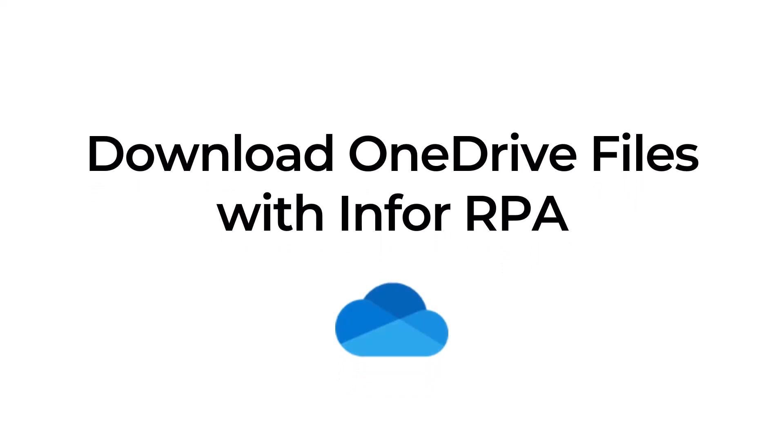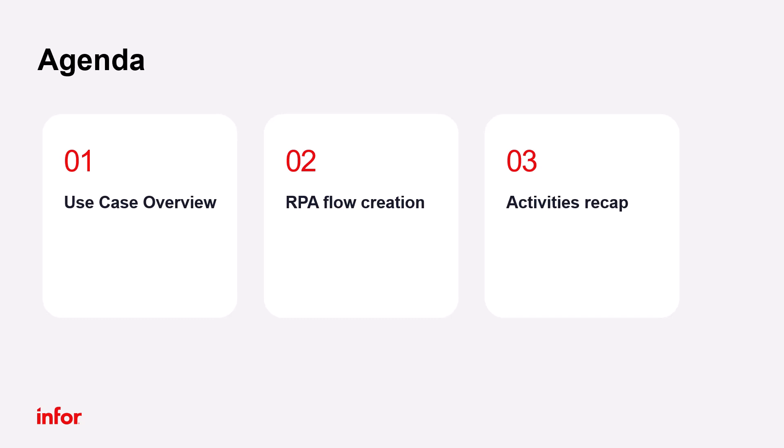Hello and welcome. This tutorial will show you how to create a basic flow in Infor RPA Studio using OneDrive activities to download files from a OneDrive folder and move them to a separate OneDrive folder. First, we will present the use case overview of how we will build the workflow, then present how to create the RPA flow and execute it, and finally we will recap the list of activities used in the flow.